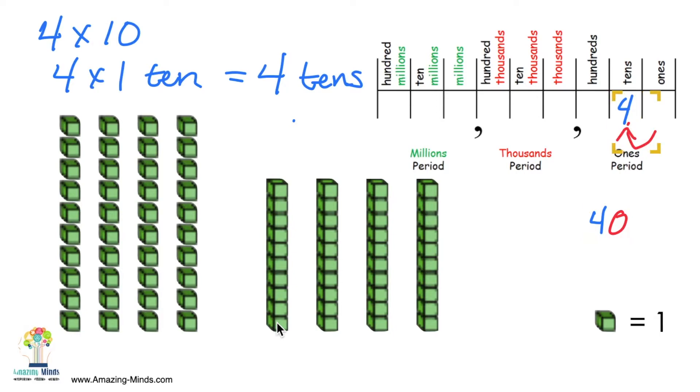And so I have to have a zero to represent that I have no ones because now I have 4 tens. I don't have any ones. Let's look at a different example.